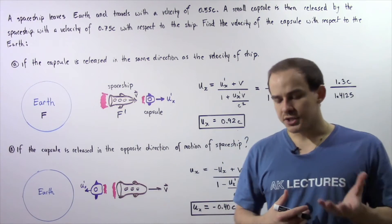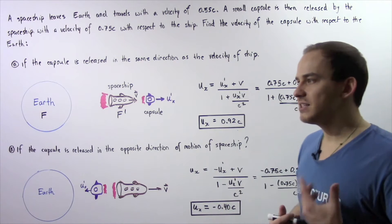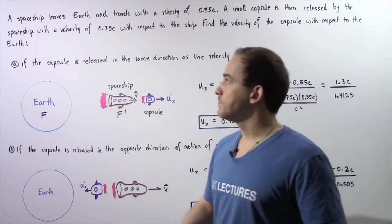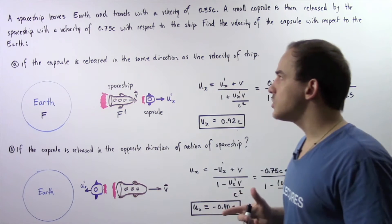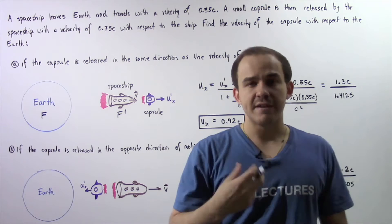Let's look at yet another example that deals with relativistic addition of velocities, also known as Lorentz Velocity Transformation. A spaceship leaves Earth and travels with a velocity of 0.55C,